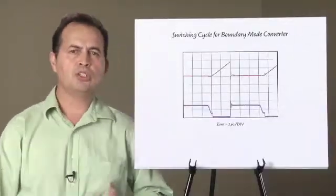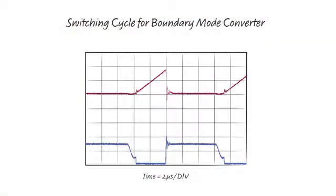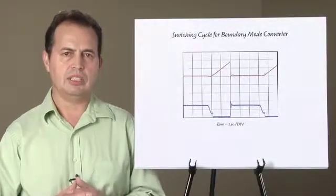This picture shows one switching cycle demonstrating boundary mode operation. The LT3798 senses when the secondary current has stopped flowing and turns the switch on just before the converter goes into discontinuous mode operation. This switching technique produces some efficiency gains.